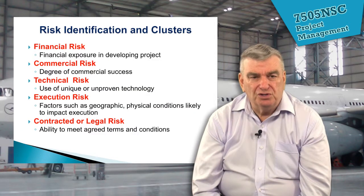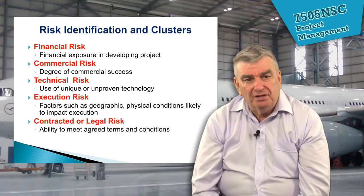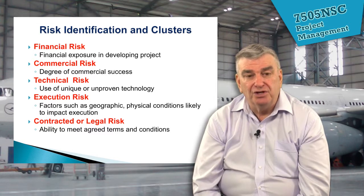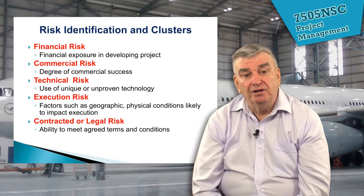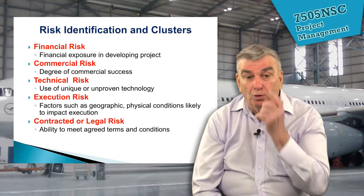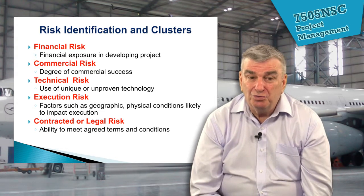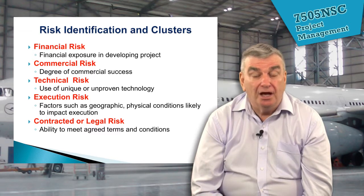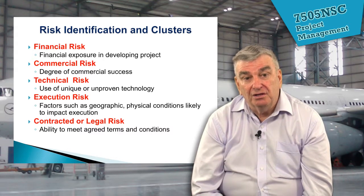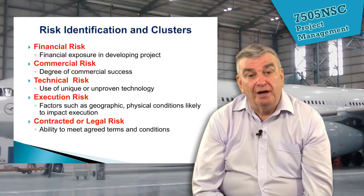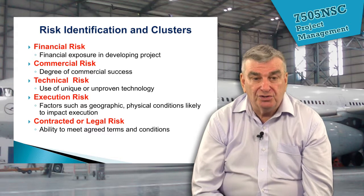What are the different types of risks? There's financial risk — financial exposure in developing the project. For example, you might overcommit yourself and find that so many problems come up that you use up all your budget solving them. To reduce that risk, Boeing with its 787 said this is such a big project that if anything goes wrong, it could put the whole company at risk. So they spread it by taking partners on board to develop the different parts of the structure.